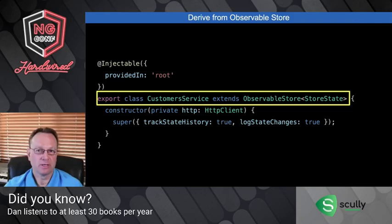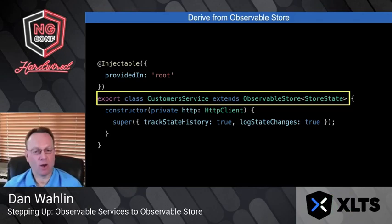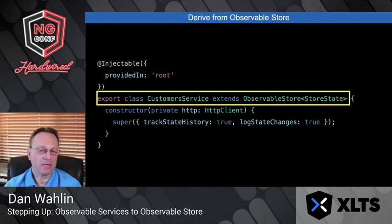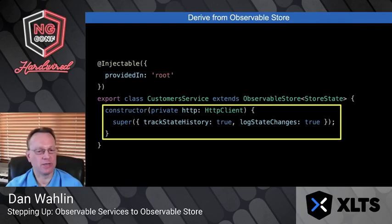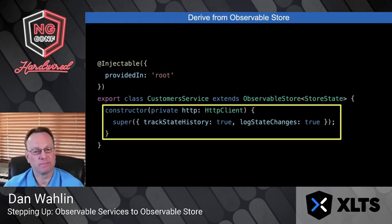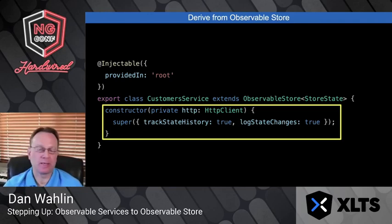If you did this on let's say 10 services, you still have one store — it creates a singleton behind the scenes and all of them can share the same data. Because we're extending, you'll of course have to call super, and there are some settings you can pass in such as trackStateHistory and logStateChanges. There are more on the GitHub repo. And because Observable Store is not specific to Angular, we don't have to register modules or anything like that — it can be used anywhere with JavaScript or TypeScript.